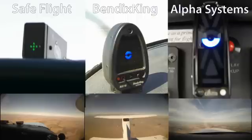Depending on the system, slips can provide very different indications. The Alpha Systems and Bendix King devices must have a clean flow of air, not obstructed by any objects on the wing. During a slip, objects such as tie-down rings or landing gear struts can obstruct the airflow and give erroneous indications. Let's see how the three devices indicate a slip.